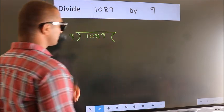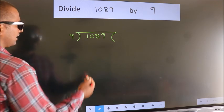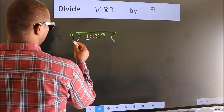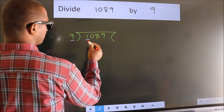This is your step 1. Next, here we have 1. Here 9. 1 smaller than 9, so we should take two numbers.